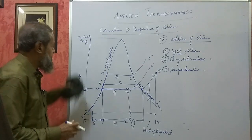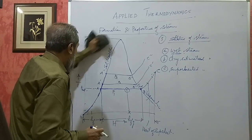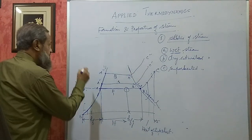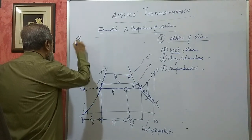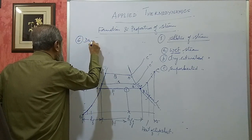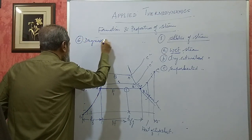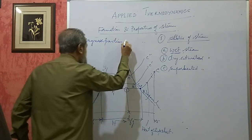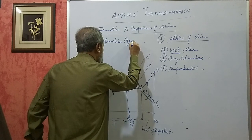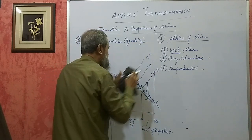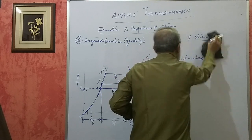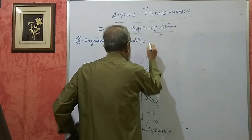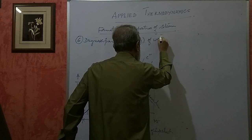We will continue further. The sixth item that we have to know is the dryness fraction — dryness fraction, or quality of wet steam. It is also called as quality of wet steam.